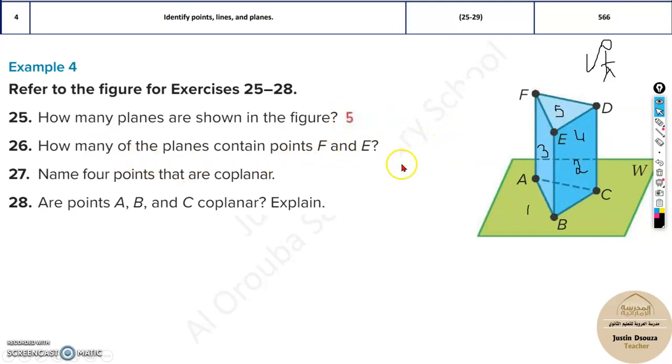How many planes contain points F and E? So now let's see where are the points F and E. That's over here and over here. So which are the planes that contain? So draw this line. Which are the planes? So this is one plane. That is F, E, A, B. And F, E, D are the two planes. So there are two planes which will have this particular line.